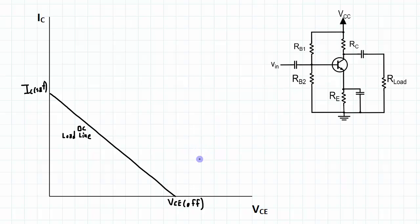The AC load line is related to the DC load line, but it represents the range of values of IC — in other words the AC value of collector current — and VCE, in other words the AC values of the collector emitter voltage.